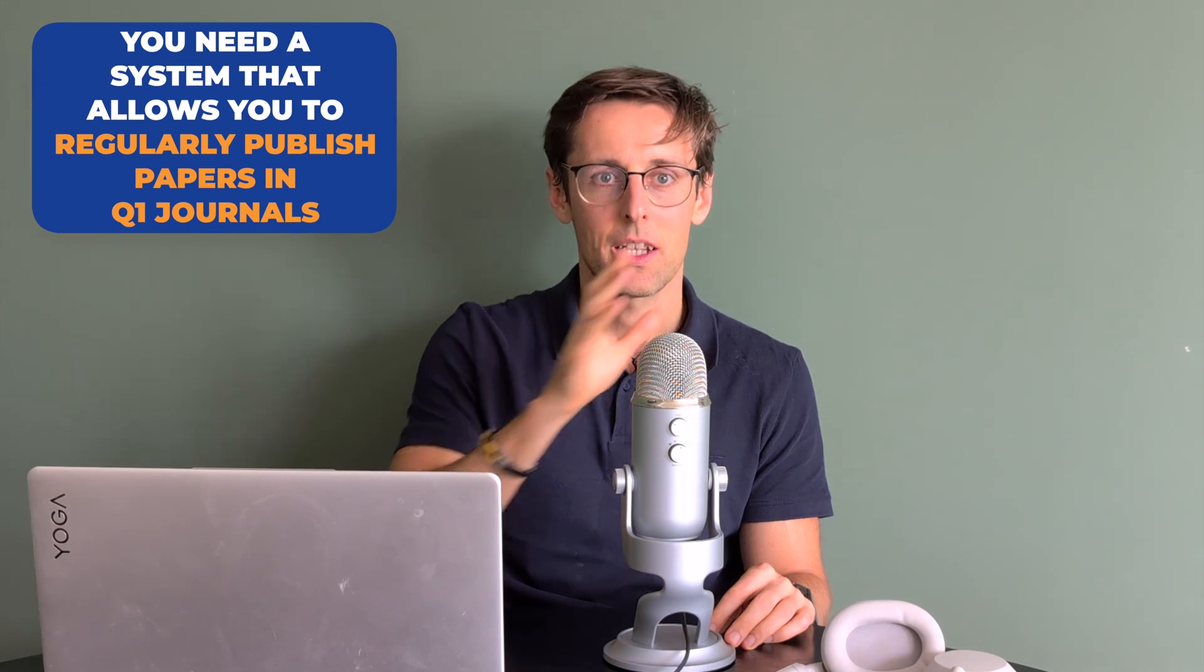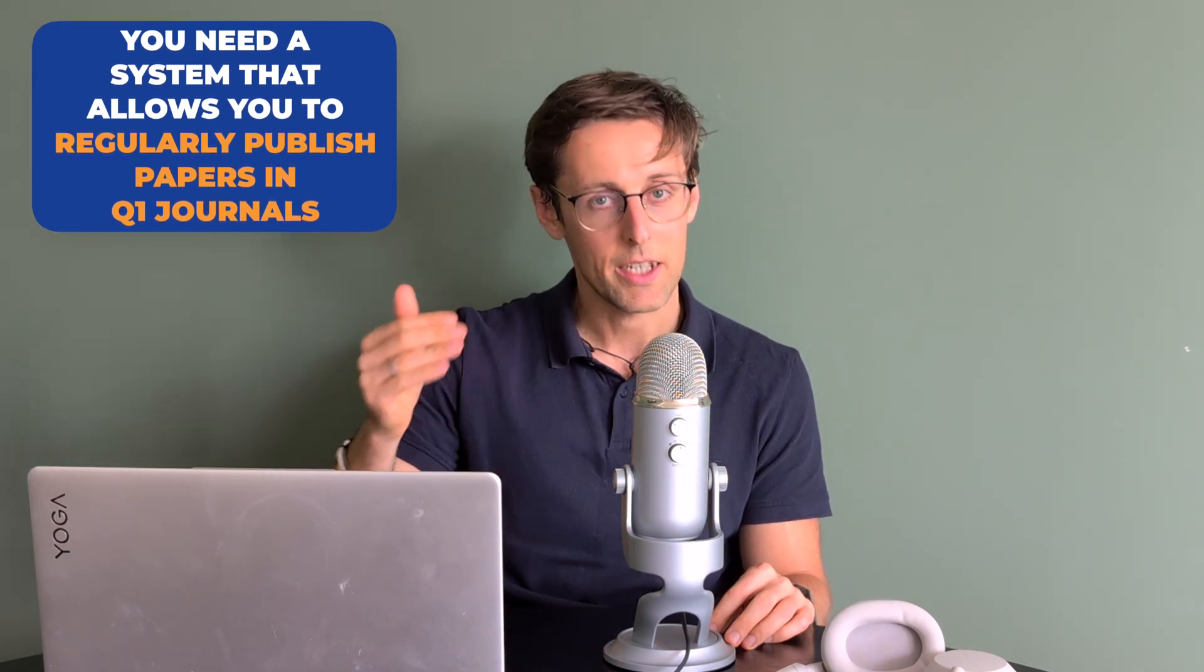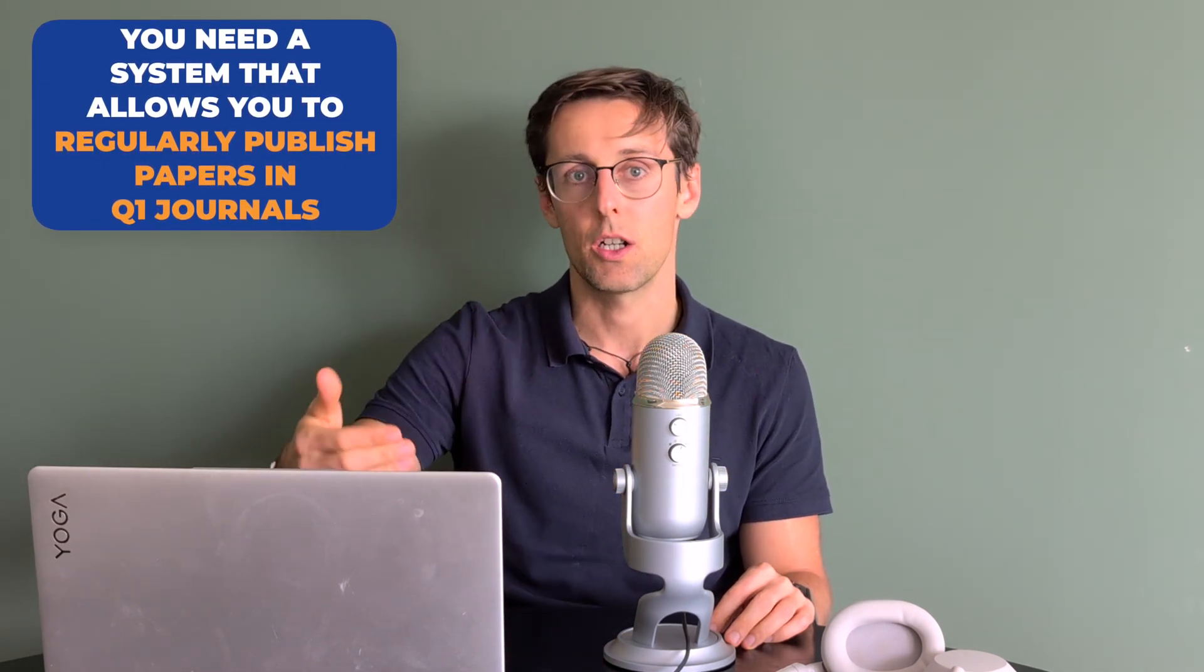So this is the whole process that allowed me to write my papers in just four hours and 22 minutes. But if you want to publish regularly, you can't really rely on these last minute sprints because they can be exhausting. What you need is a system that allows you to regularly put out papers for top journals in your field. And this next video shows you exactly how to develop such a system so that every single year you can publish three or more papers in Q1 journals without burnout, without working 60 hours a week. So watch this video next.